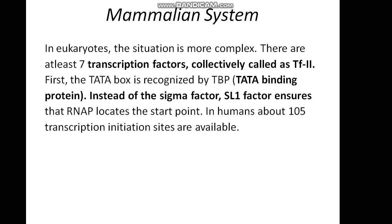In the mammalian system, the situation is more complex. In eukaryotes, there are at least 7 transcription factors collectively called TFIID. The TATA box is recognized by TBP, the TATA-binding protein, instead of sigma factor. The SL1 factor ensures that RNA polymerase locates the start point. In humans, about 105 transcription initiation sites are available.